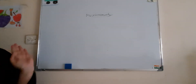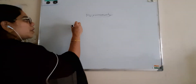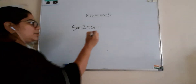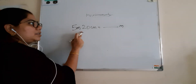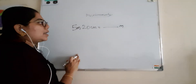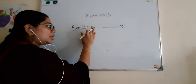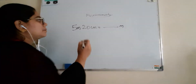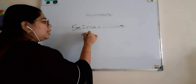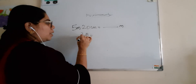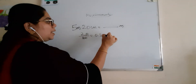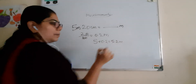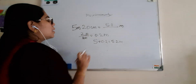Now we are going to see another question with meter and centimeter: 5 meter 20 centimeter, and you want to convert to meter. Already 5 meter stays as such. Centimeter is less than meter, so to convert centimeter to meter you divide by 100. So 20 divided by 100 equals 0.2 meter. Therefore 5 plus 0.2 equals 5.2 meter.